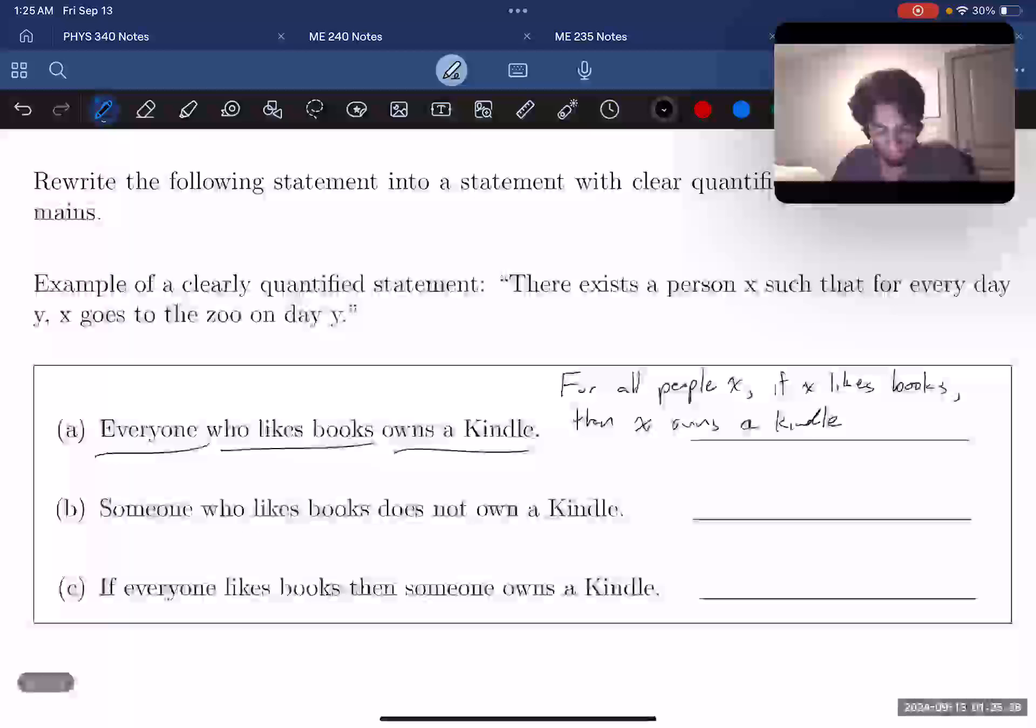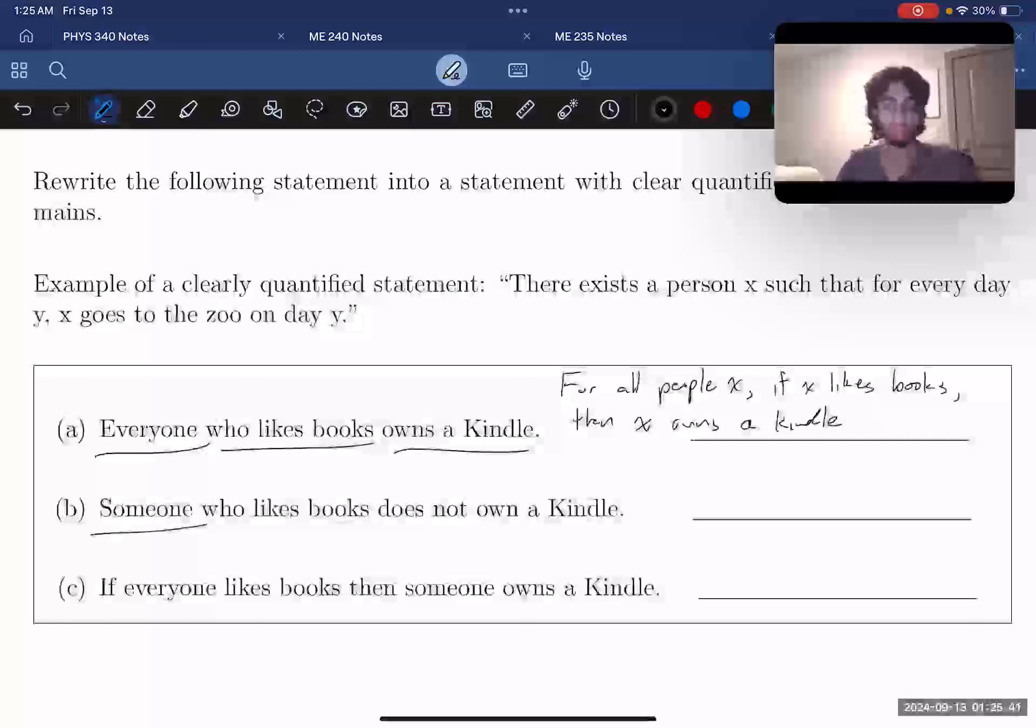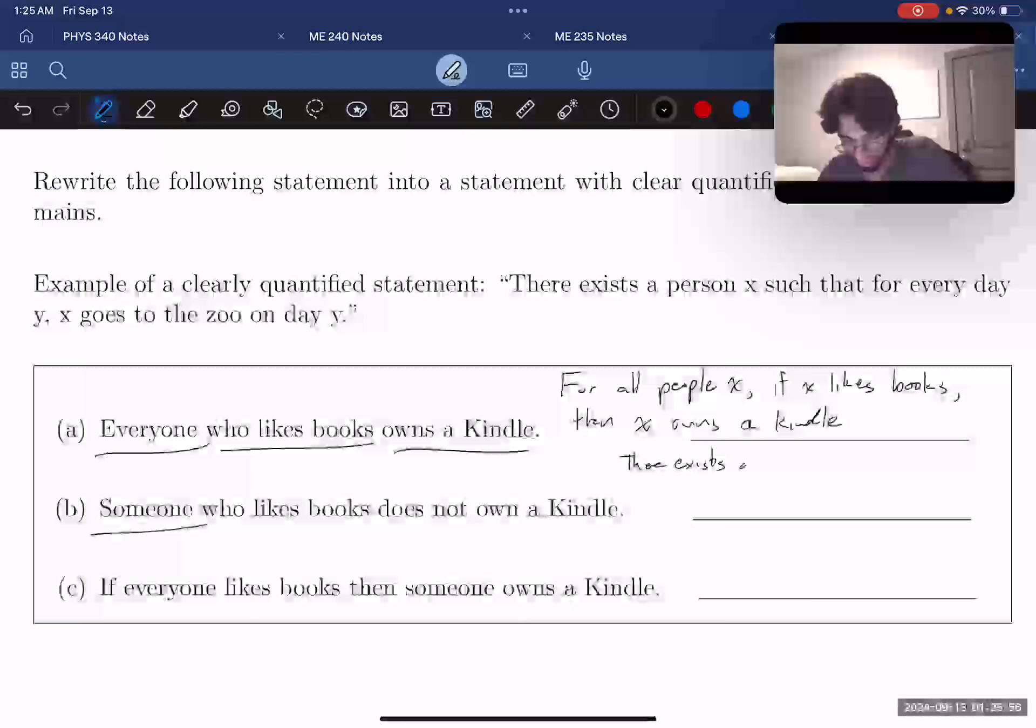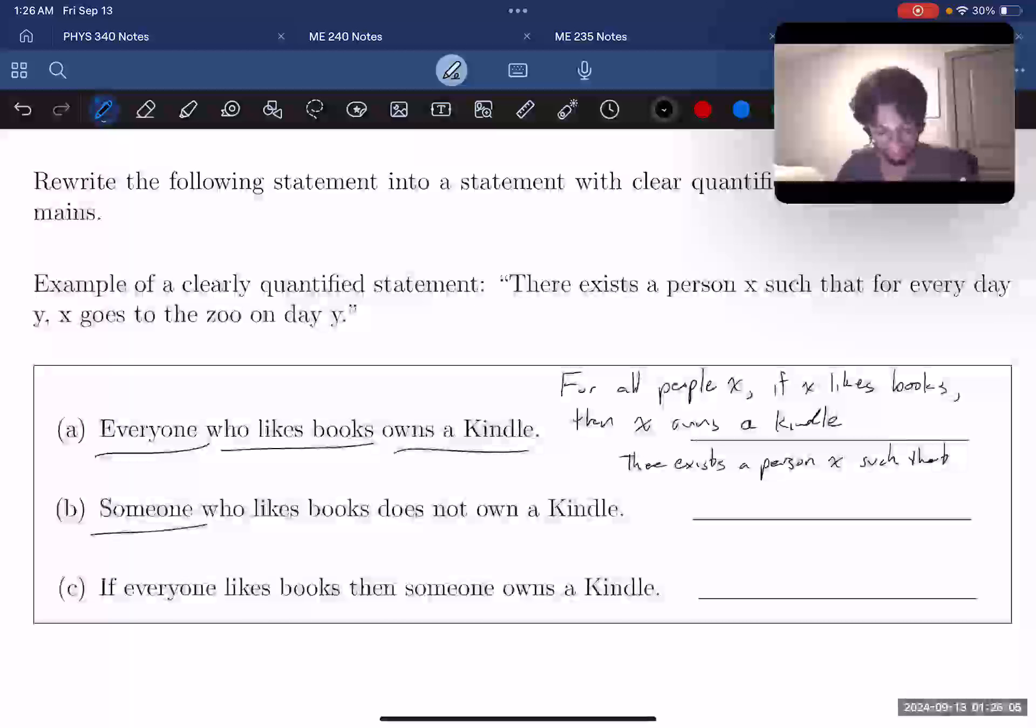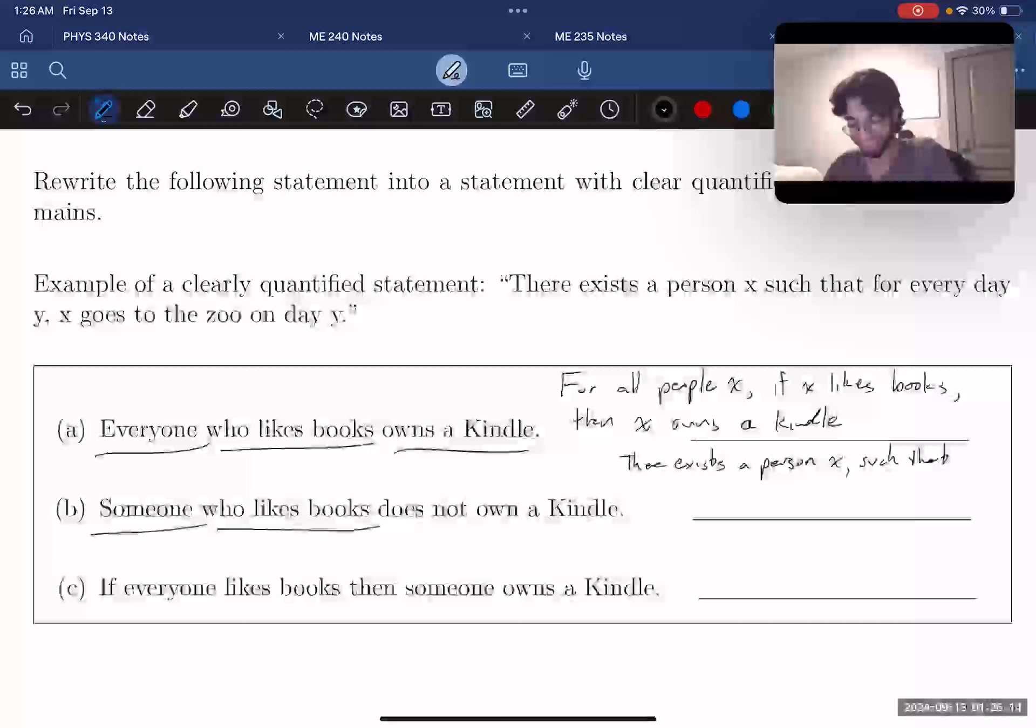Looking at Part B now, we're starting with a someone. Someone means, unlike in Part A, we're looking for there existing at least one person X. So we can start our statement like this: there exists a person X such that, and we'll figure out what comes after this. So this person likes books, so we can add a comma. I'm going to go here, such that X likes books.